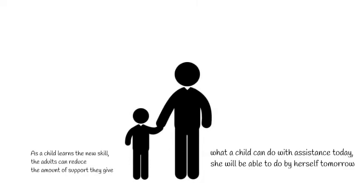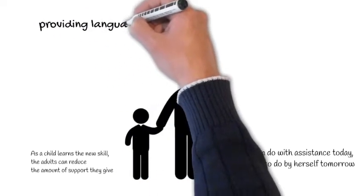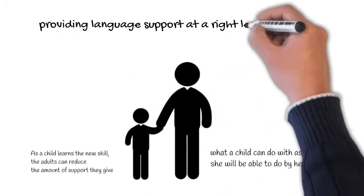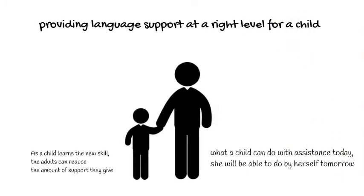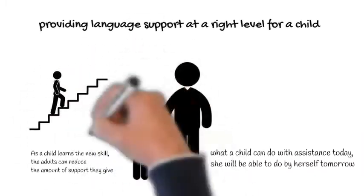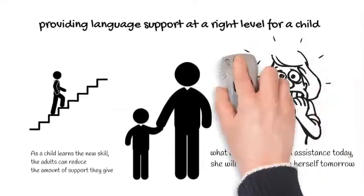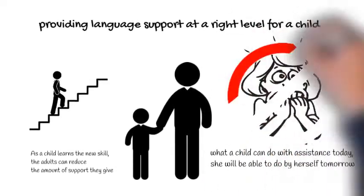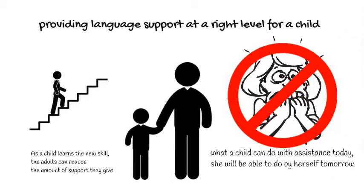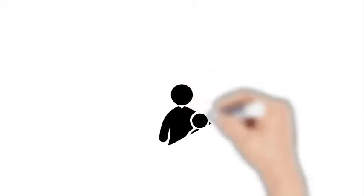Scaffolding can be used by all the adults talking to a child, including parents. Providing language support at the right level for a child can really make a difference to their talking and understanding. The aim of using scaffolding is to make language accessible to children and help them move on to the next stage. Adults using scaffolding can also help to reduce anxiety about talking for children they are working with. Successful scaffolding relies on you knowing the language level of the child you are working with.